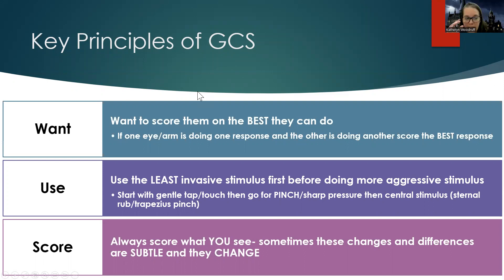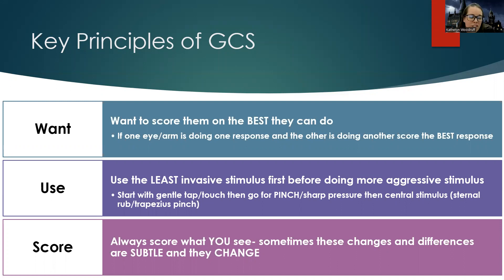Key principles: always score the patient on the best they can do. If one eye or arm is doing one response and the other is doing another, score the best. Always use the least invasive stimulus first — gentle tap, then pinch or sharp pressure, then central stimuli like sternal rub or trapezius pinch. Score what you see, not what you expect. These subtle changes can change, so always report them. Maximum GCS score is 15, lowest is three.